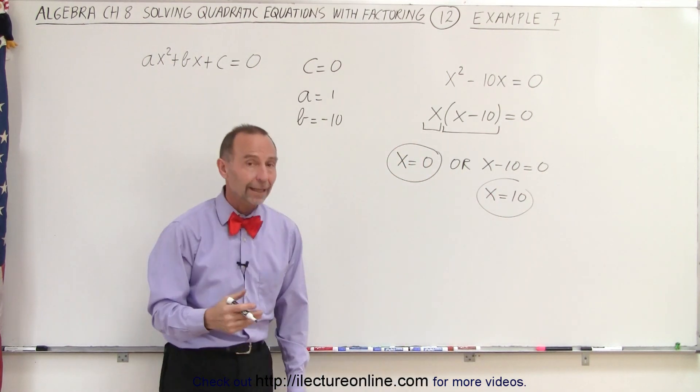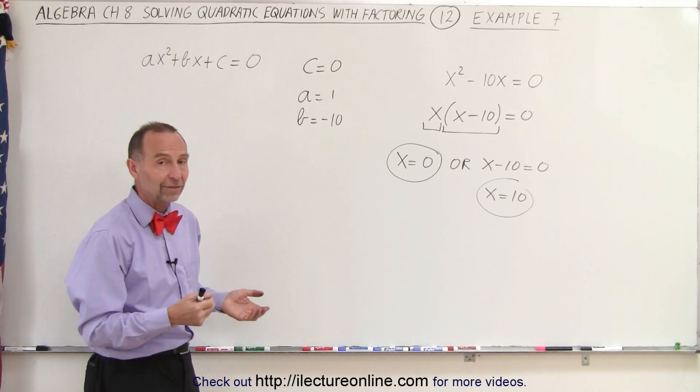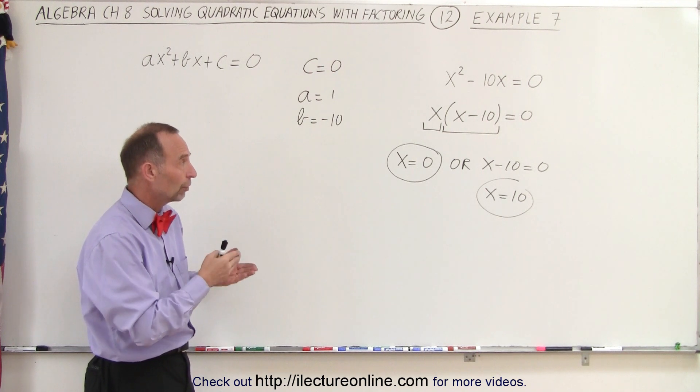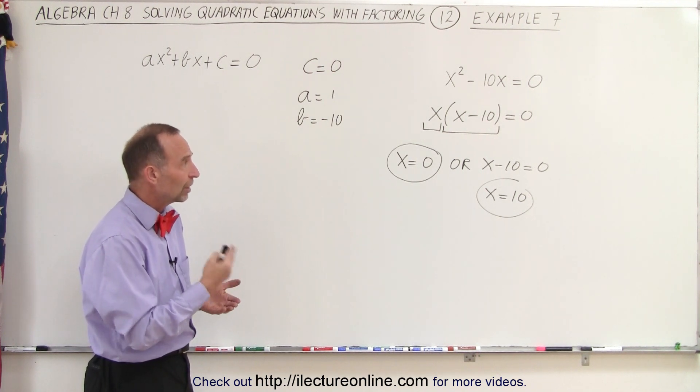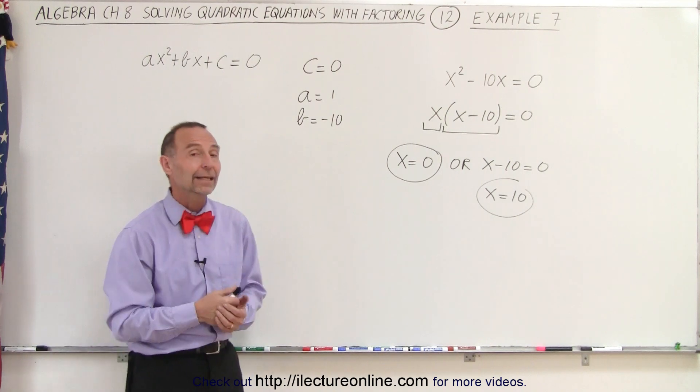And so you can see that again, you'll have two solutions by first factoring, then realizing when the product equals zero, both of the factors must equal zero, and then you solve for both of them. And that is how we do that.